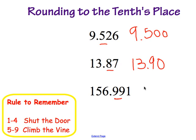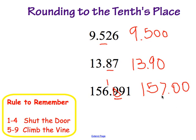Our last problem — we are looking at the number to the right of the underlined number. It is a 9, so our rule says 5 through 9, climb the vine. So this time when we climb the vine, the underlined number is going to turn to a 10. That turns to a 0 in the 9 spot and we are going to have to carry the 1 over to the left, making our answer 157 and 0 tenths — so our answer is just 157.